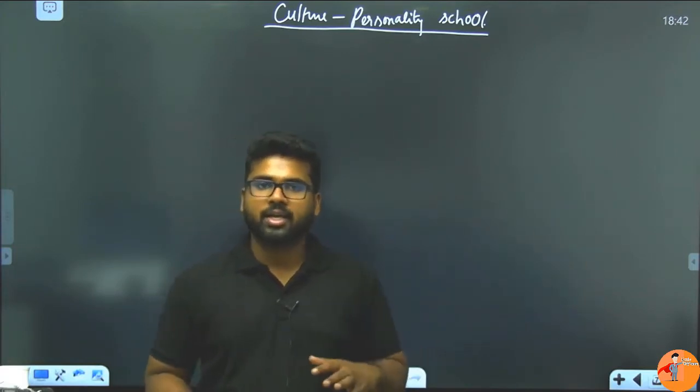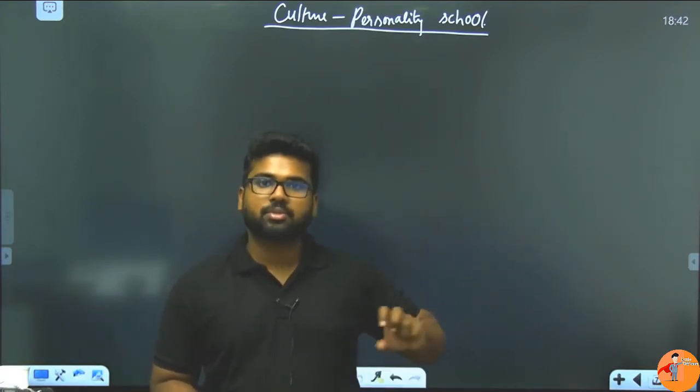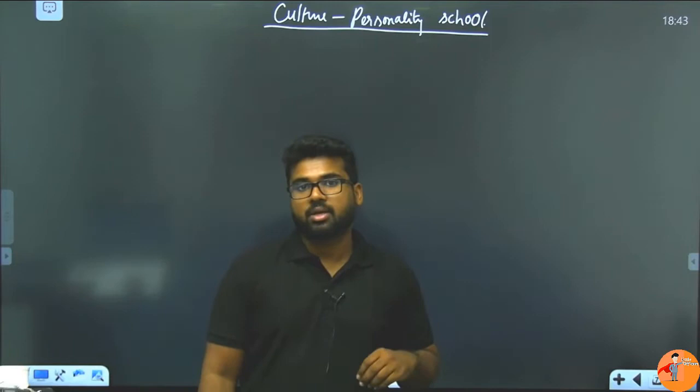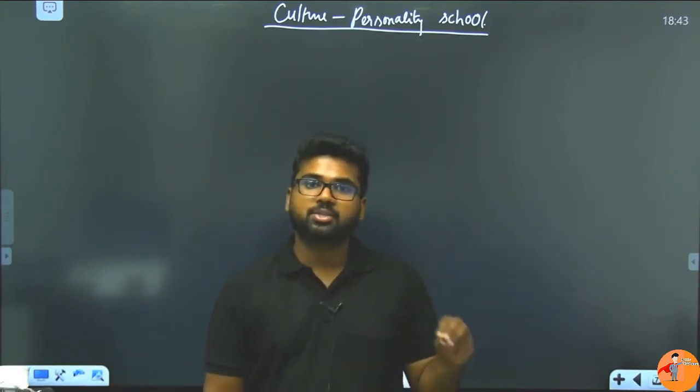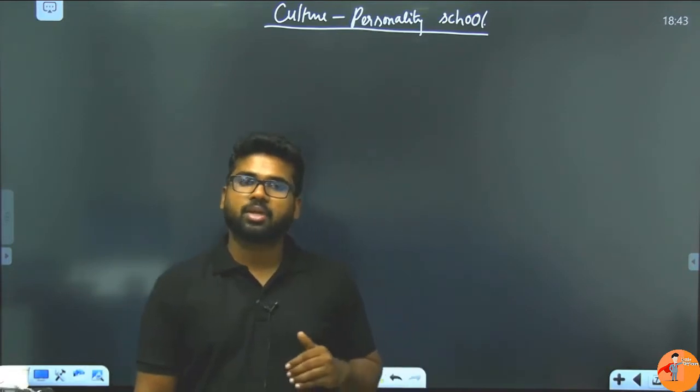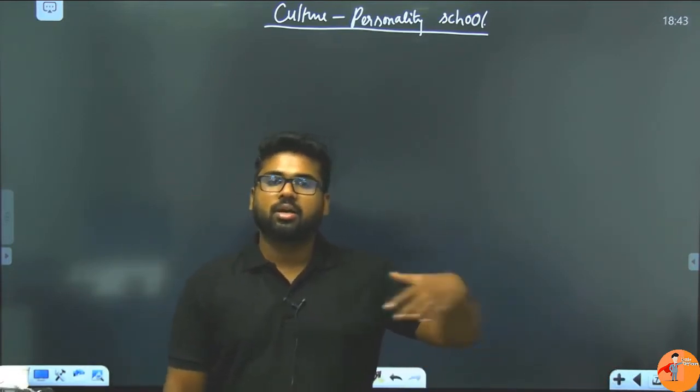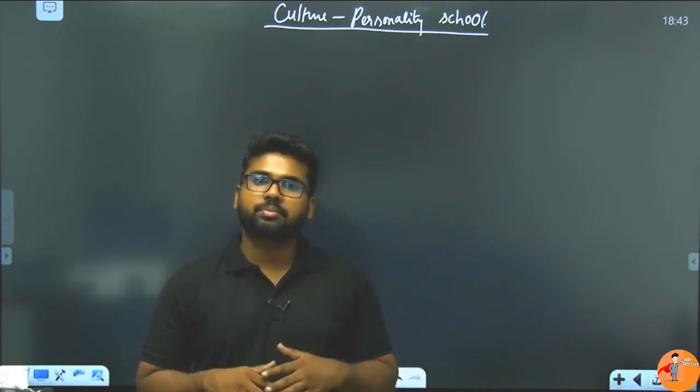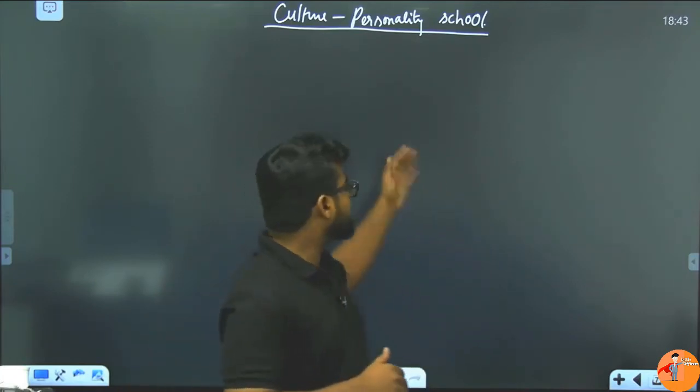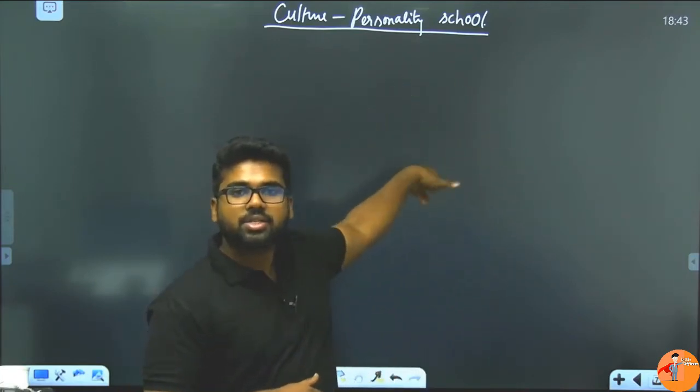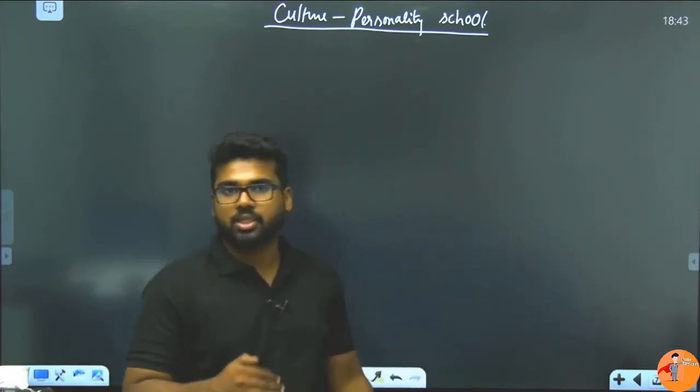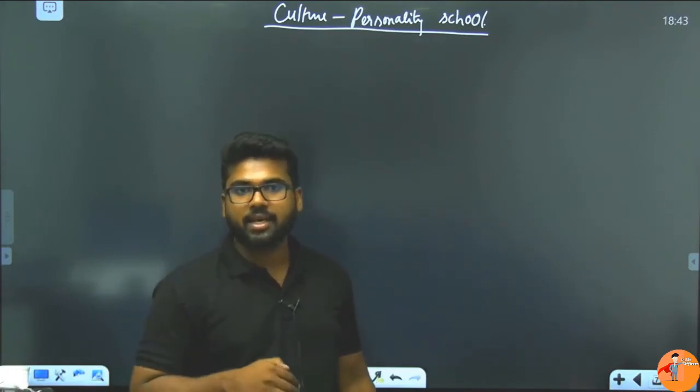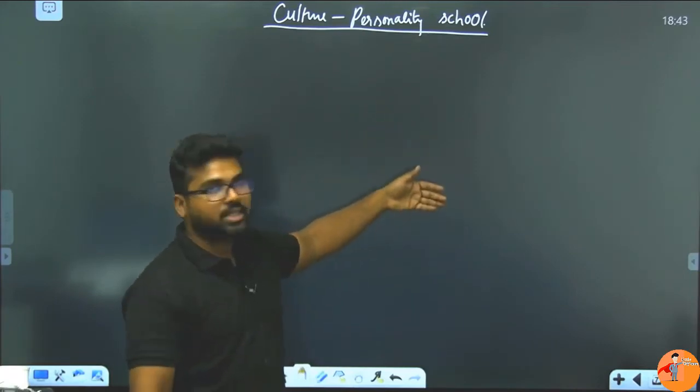We have seen the evolutionary approach - that was the first initial step based on the organic evolution which we studied in section 1.4. On that basis, the evolutionary school came and explained its perspective. Then different schools like historical perspective, diffusionistic school, functionalistic school, structuralistic school. Now we are talking about culture and personality basis because structuralism introduced and connected anthropology and psychology, but didn't go completely deep. This school takes that to the next level.